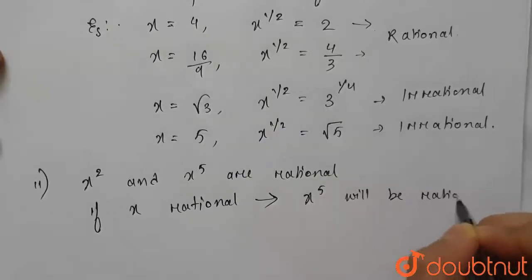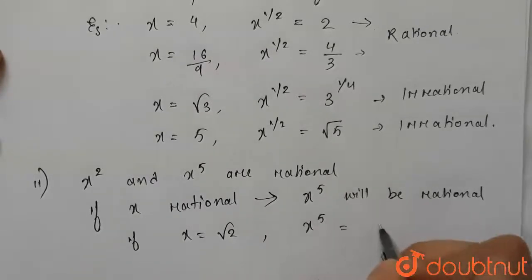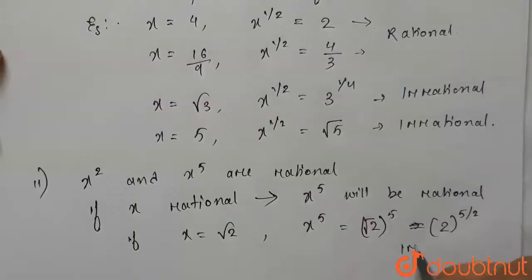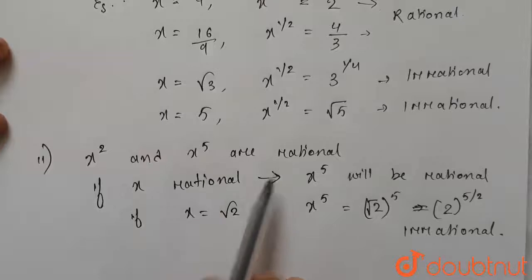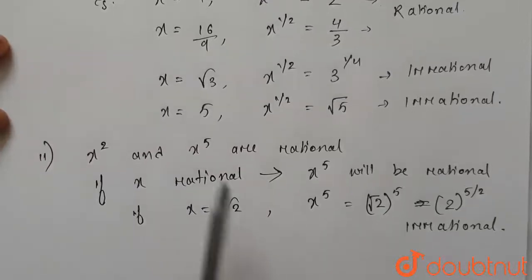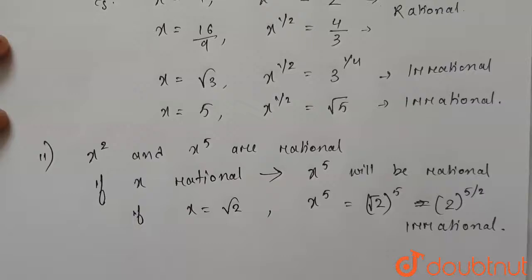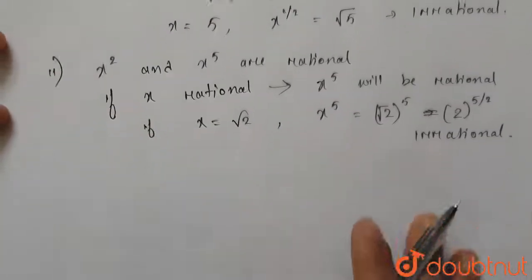For example, if x equals root 2, which is irrational, then x to the power 5 equals root 2 to the power 5, which equals 2 to the power 5 by 2, which is also irrational. So for x to the power 5 to be rational, x must be rational. Since the statement uses 'and', for both x square and x to the power 5 to be rational, x has to be rational. This condition also implies that x is rational.